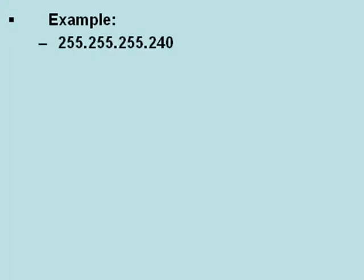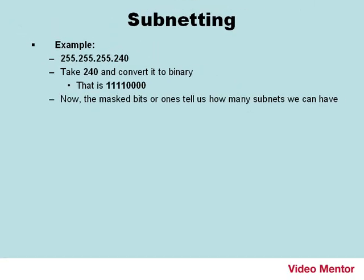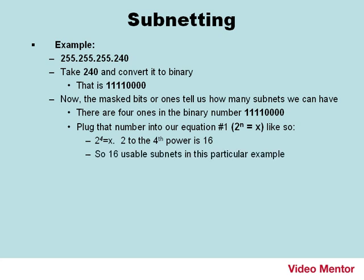Let's show an example. Subnet mask 255.255.255.240 — take 240 and convert it to binary: that becomes 11110000. The masked bits, or ones, tell us how many subnets we can have. There are four ones in 11110000, so we plug that into equation one: two to the fourth power equals 16. So there are 16 usable subnets — we've subdivided our network into 16 usable subnetworks.